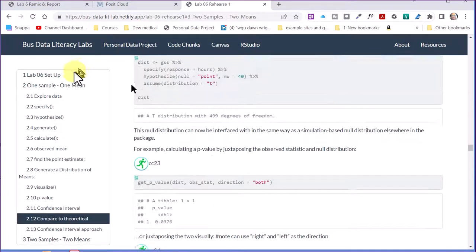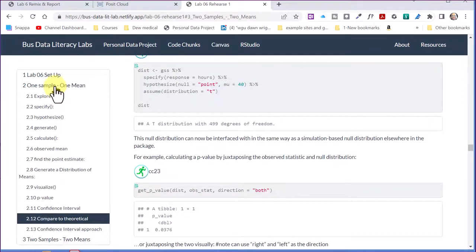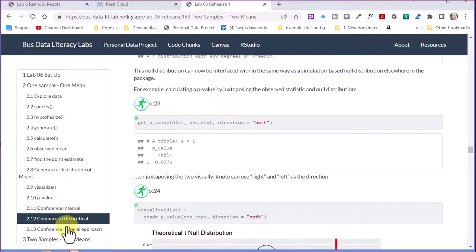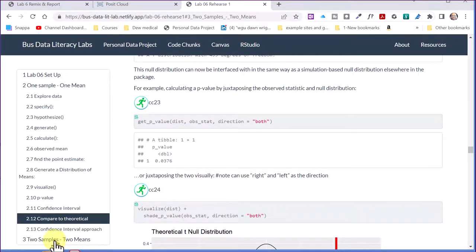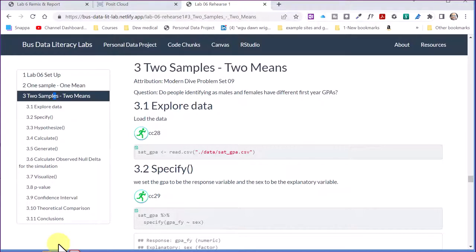And here is one sample, one mean. We've got two samples, two means. So I'm going to click down here to the bottom. And it's got a similar question. Here, our categorical variable is the identified sex, males and females, first year GPA, different variable for us to use.